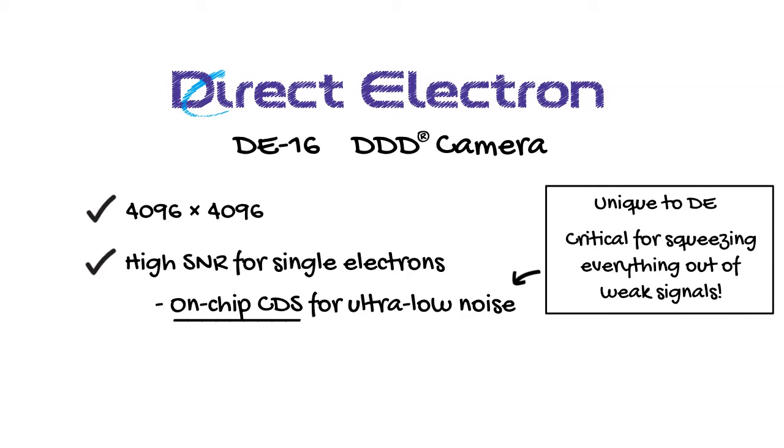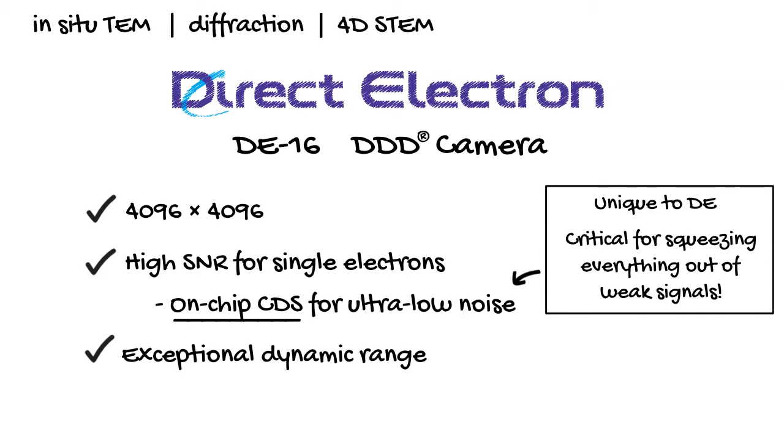Last but not least, the DE-16 has exceptional dynamic range. See, we didn't design the DE-16 specifically for low-dose biological cryo-EM, and then just try to adapt it for other applications. No, we designed the DE-16 with the versatility necessary for a wide range of applications, from in-situ TEM, to electron diffraction, to 4D STEM, to EELS. And it turns out in the process, we also got a camera that works really well for low-dose imaging too.